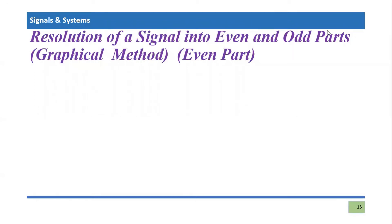We are going to start another video tutorial on signaling systems and continue the discussion from the previous video. We covered how one can resolve a signal into even and odd parts using a mathematical method. Today we are going to cover the same topic but using a graphical method — resolving the signal into its even and odd parts using graphs.